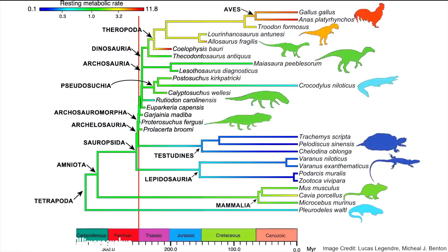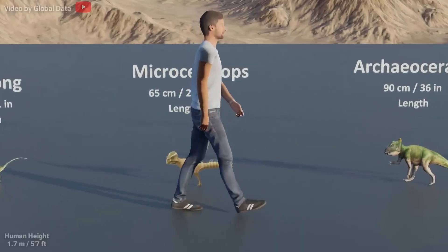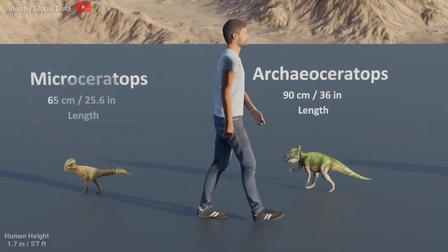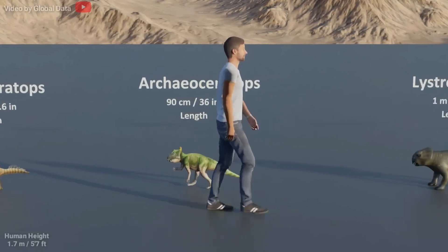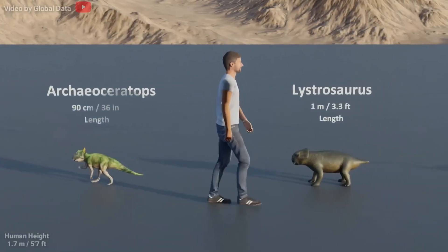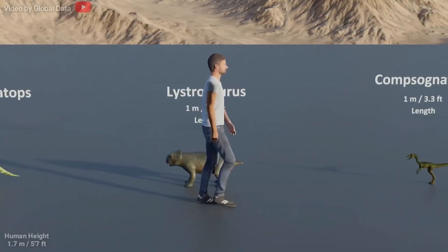Something interesting that a lot of people don't know is at the very beginning of the Triassic period, which is when the dinosaurs started, most dinosaurs were dog-like or horse-like in terms of their size. The lumbering beasts that are tons and tons came way, way later.